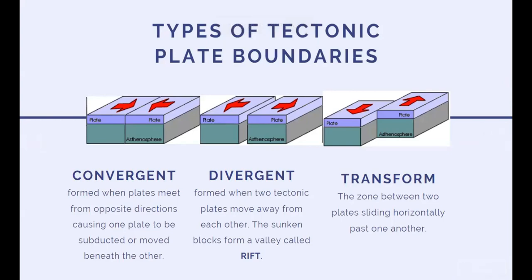There are three kinds of tectonic plate boundaries: convergent, divergent, and transform. Convergent plate boundaries are formed when plates meet from opposite directions, causing one plate to be subducted beneath the other. Divergent boundaries form when two tectonic plates move away from each other, and the sunken blocks form a valley called a rift. Transform boundaries are zones between two plates sliding horizontally past one another — most are found on the ocean floor. For example, the North American and Pacific plates along the San Andreas Fault have been sliding past one another for about 10 million years at an average rate of 8 centimeters per year.